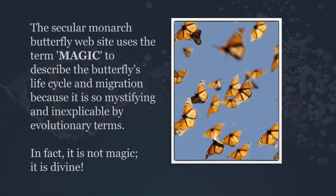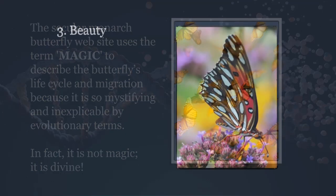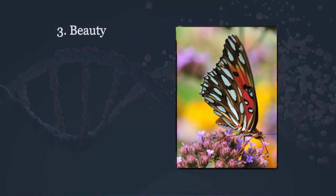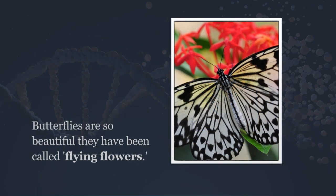Understanding these things to some degree does nothing to explain how such breathtakingly complex biological equipment and process could evolve. The secular monarch butterfly website uses the term 'magic' to describe the butterfly's life cycle and migration because it's so mystifying and inexplicable in evolutionary terms. You and I know it's not magic — it is divine. It's God.